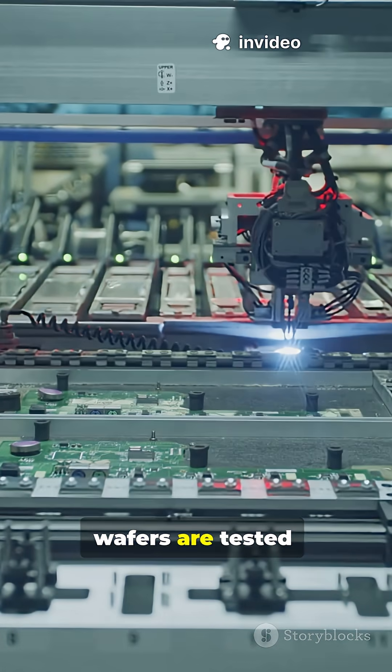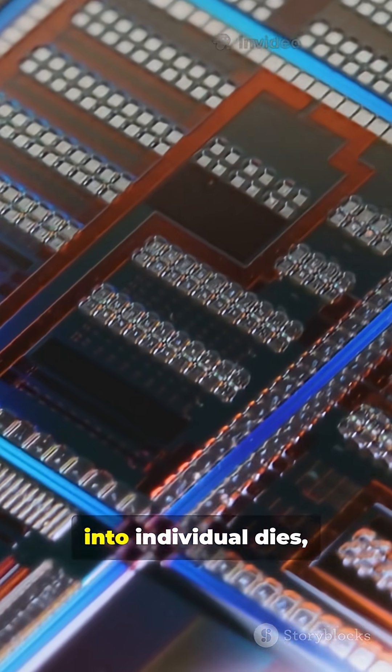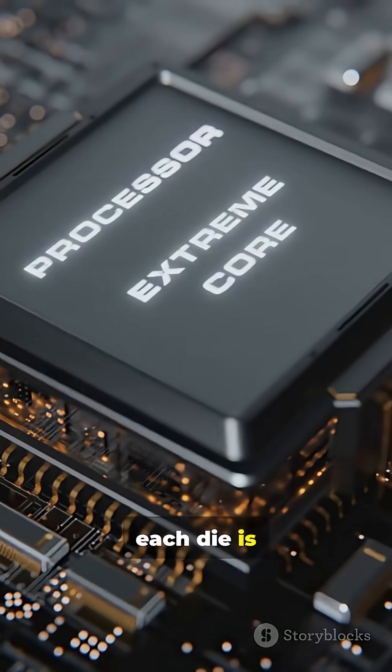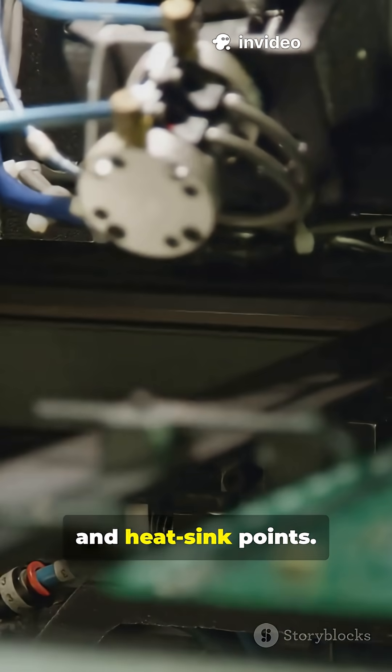After fabrication, wafers are tested to find the chips that pass. Wafers are diced into individual dies. Each die is inspected and sorted. Then the good dies are packaged to protect connections and heat sink points.